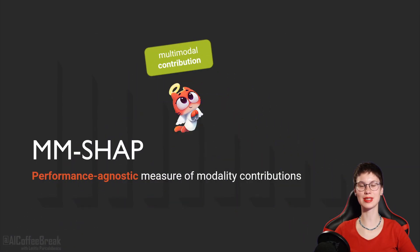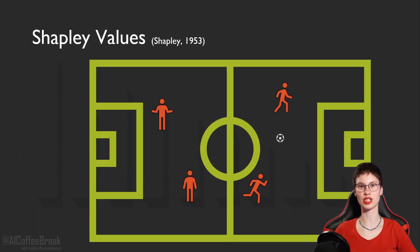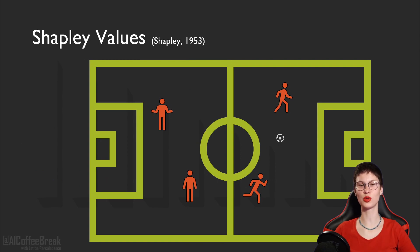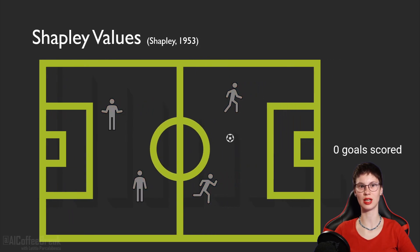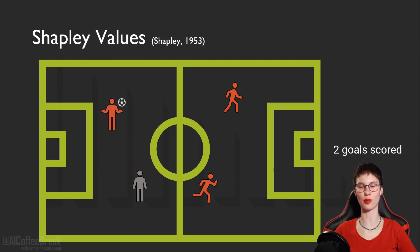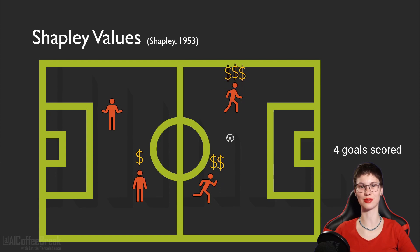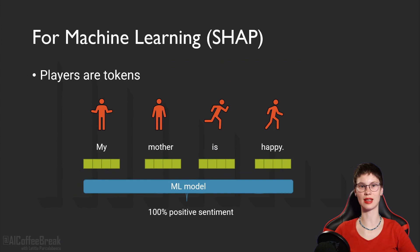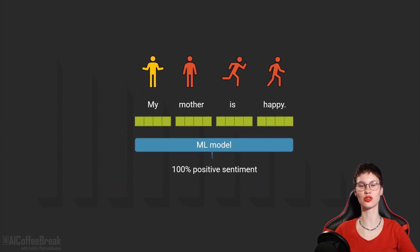So we propose a performance-agnostic measure of multimodal contributions. First, we rely on Shapley values from game theory. Shapley values compute a fair payout for each player based on their contribution to a game's outcome. For example, if machine learning were a soccer game, we would first assess the base value — the game outcome when no player is playing — then gradually let them play and measure in all possible combinations of teams what the game outcomes are, and determine how much payment they deserve. For transformers, the players are tokens, and they receive payouts from their contribution towards the model prediction.